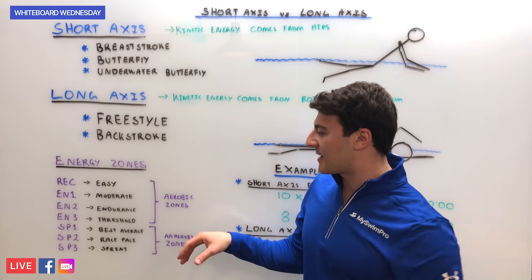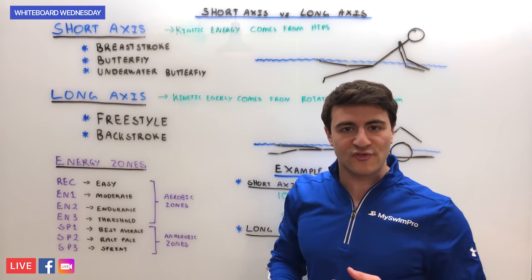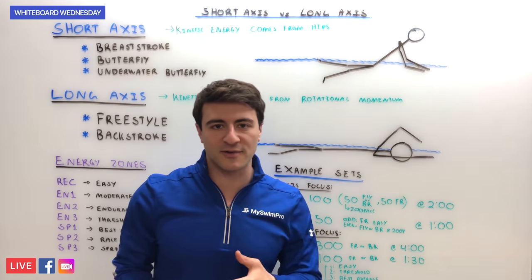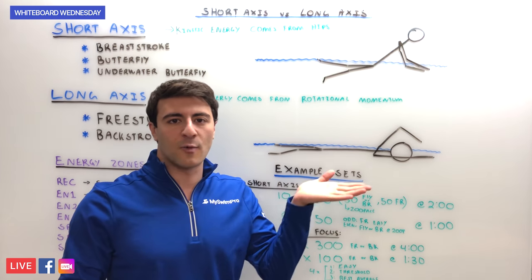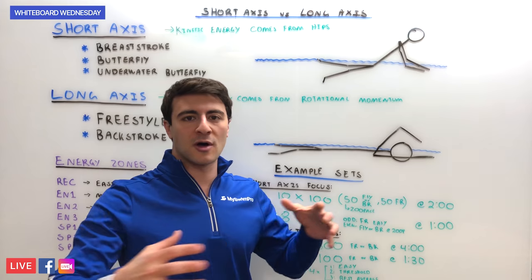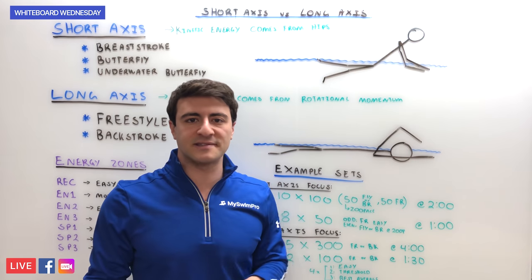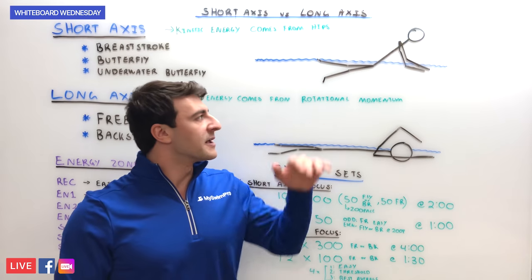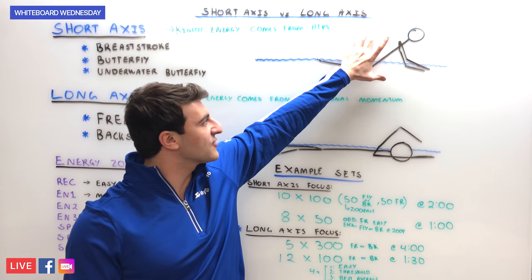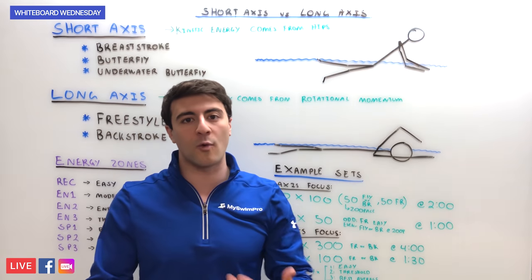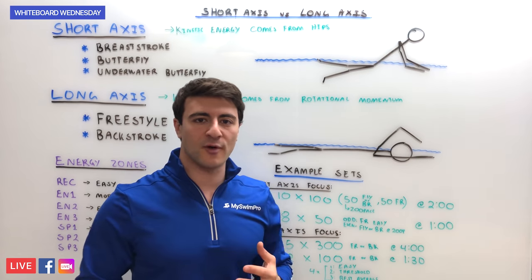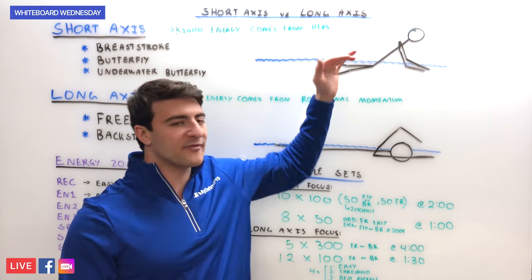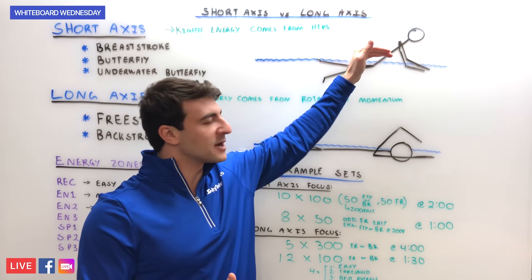You want to spend a different amount of time in each zone depending on long axis versus short axis, because of your body position in the water. In freestyle or backstroke, your body stays relatively high in the water even over a long period of time. But in breaststroke or butterfly, your body position will suffer much more — sinking lower and lower — which is why in a short axis stroke it's super important to train at race pace or even above race pace, to teach your body what it's like to swim fast and prevent the negative effects of a lower body position.